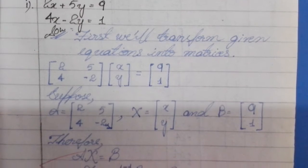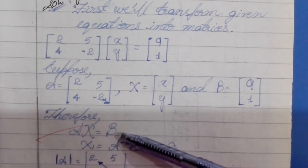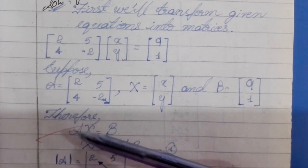Now, there is a formula: A into X is equal to B. X is left here and A is multiplied here.